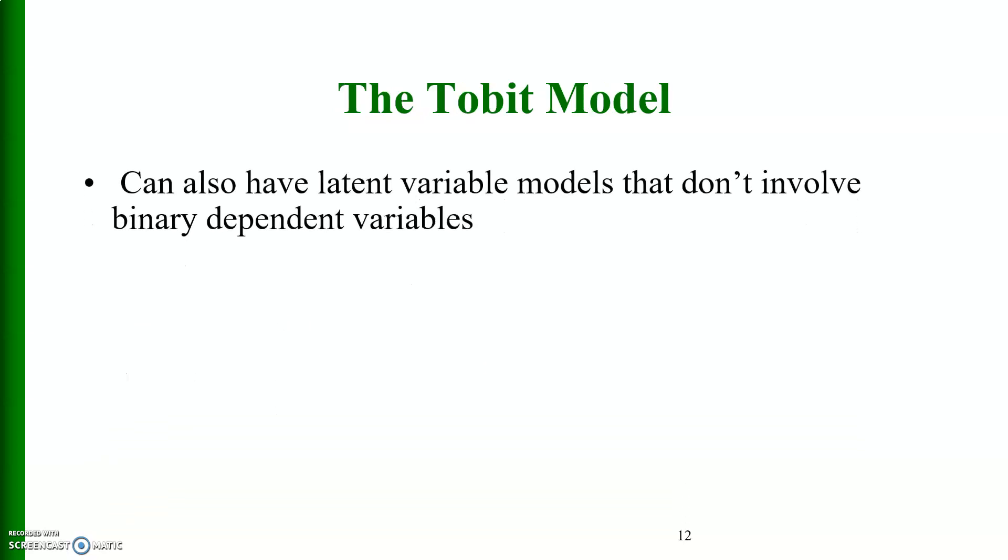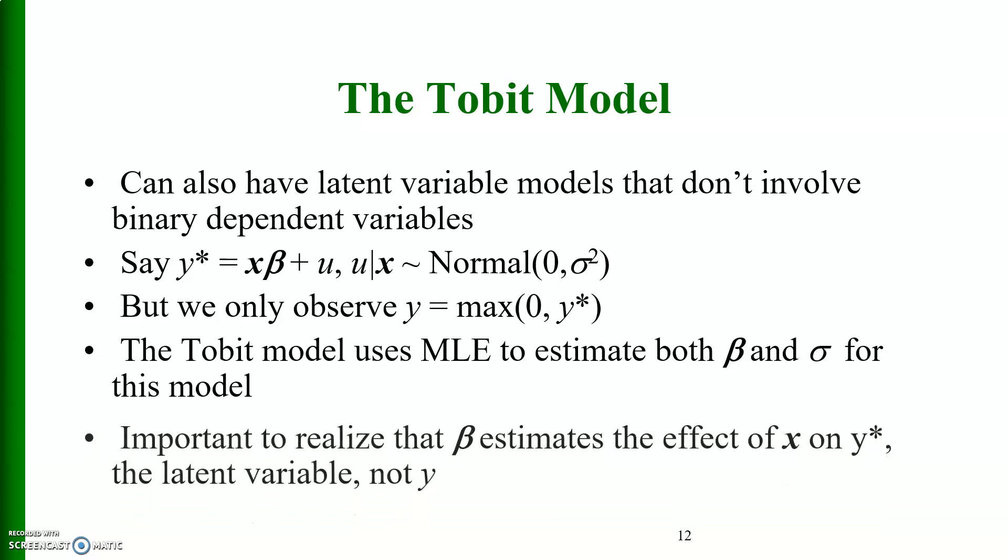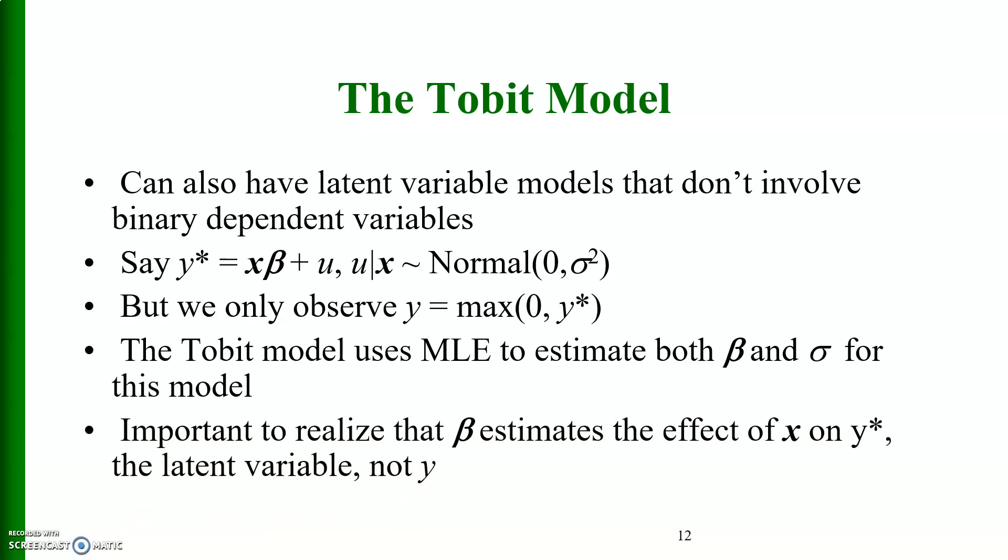The tobit model. We can also have latent variable models that do not involve binary dependent variables. Say for example, y star is equal to x beta plus u, where u given x has a normal distribution with 0 mean and sigma square as a variance, but we only observe y. The tobit model uses maximum likelihood estimation to estimate both beta and alpha for this model, but it is important to realize that beta estimates the effects of x on y star, the latent variable, not y.